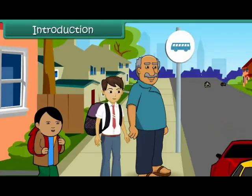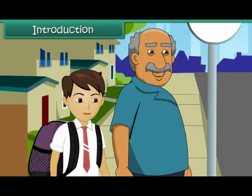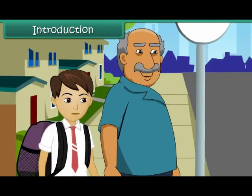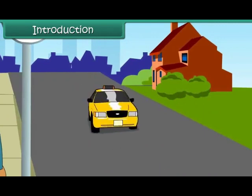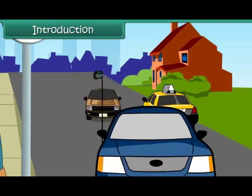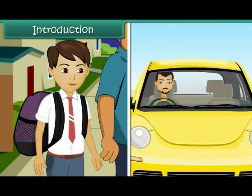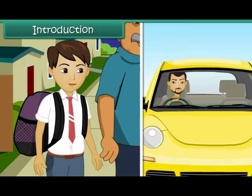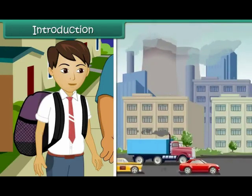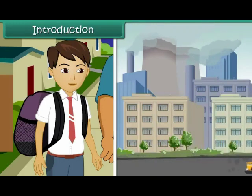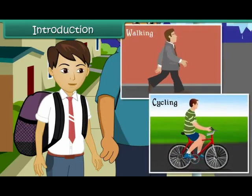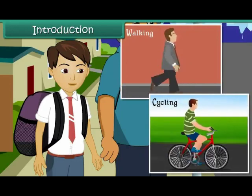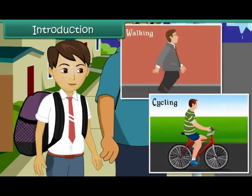Ajithi is waiting with his grandfather at the bus stop for his school bus. He is busy observing the people rushing for their offices. All of them have their scooters and cars, and most of them are alone in their cars. Ajithi is aware that vehicles cause air pollution. He wonders why people cannot walk or cycle to nearby areas — it will not only reduce air pollution but also improve their health.